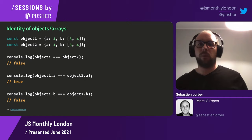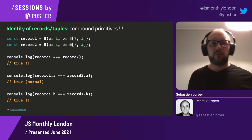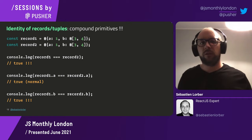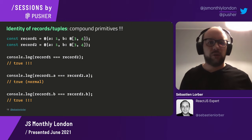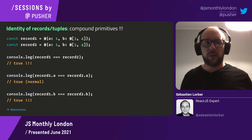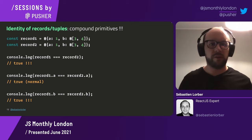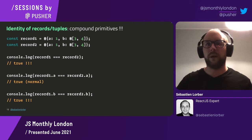Records and tuples behave very differently from objects and arrays. If two records have exactly the same content, it's guaranteed that the triple-equal operator will return true. Records and tuples are compound primitives — just like primitive values, if they have the same value, they are always equal. This is very important because it has a lot of implications, particularly for React, which I'll explain later with some demos.